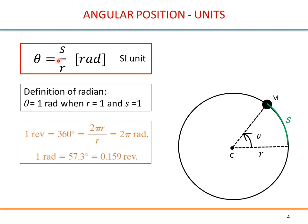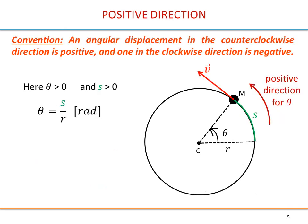One revolution, following this formula, is a length of 2 pi R for S divided by R, so that's 2 pi. So everything is consistent. In fact, theta is an algebraic variable, so we have to define a positive direction for theta. In this case we have selected counterclockwise as the positive direction, and this is a convention.